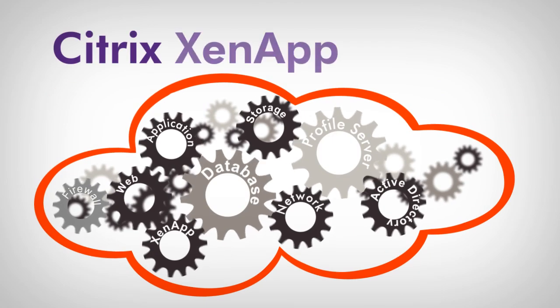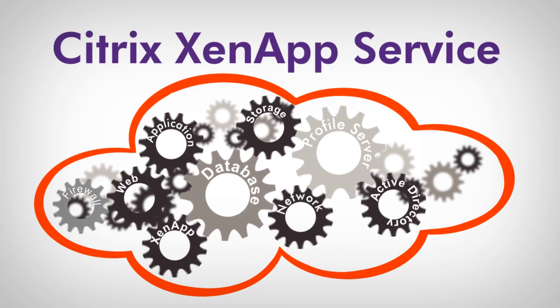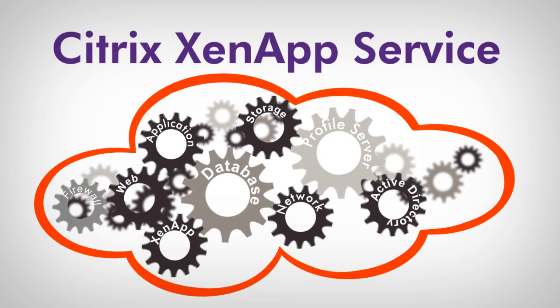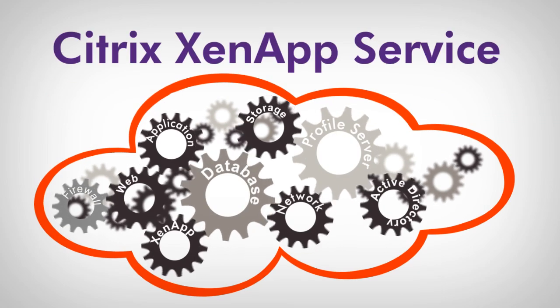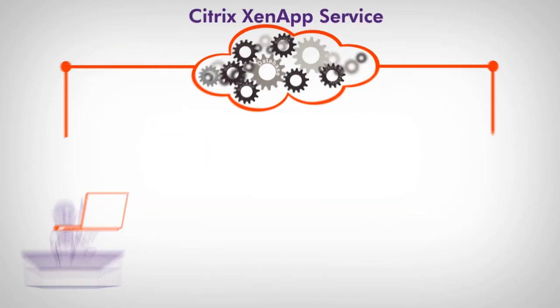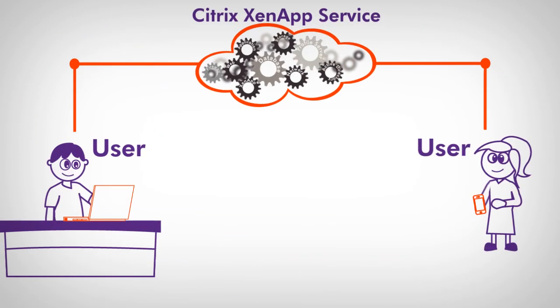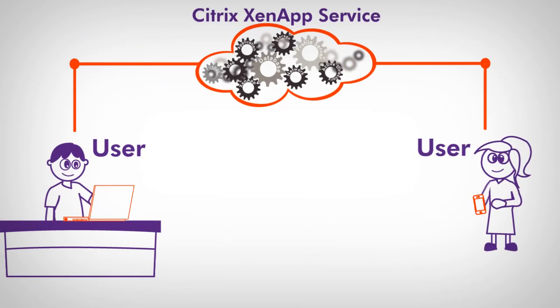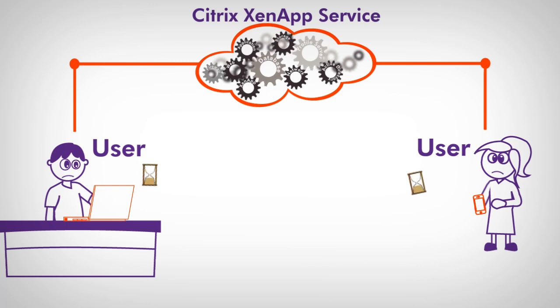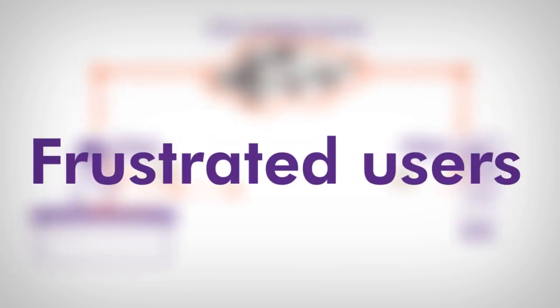The Citrix ZenApp service relies on many systems, networks, and applications in order to work smoothly. Each application is like a cogwheel in the Citrix ZenApp service. A single failure somewhere in the infrastructure can bring the service to a mind-numbing crawl, leaving end users frustrated,